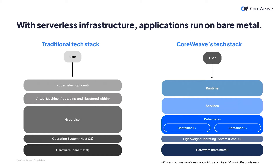On a high level, the traditional tech stack has bare metal and an operating system on top. On a generalized cloud, there's a hypervisor responsible for spinning up virtual machines that have your binaries, apps, and libraries, and then Kubernetes pods spin up on top of those VMs. At CoreWeave, we eliminate the need for a hypervisor and virtual machine entirely — we have bare metal, a lightweight operating system, and we run Kubernetes directly on top. This mitigates the additional latency caused by a hypervisor, especially when spinning up containers fast to serve users. We also provide optimized runtime so you can spin up containers and load your model efficiently.